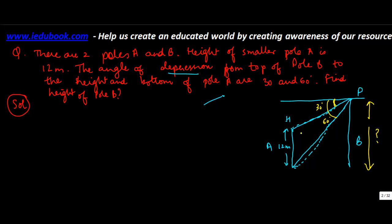We already know that this length is 12 meters, so let's draw one horizontal line. Because the top of pole A and the base are both on horizontal lines, and the line from P is also horizontal, we can safely conclude that these lines are parallel.